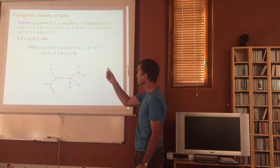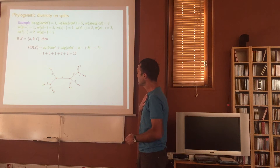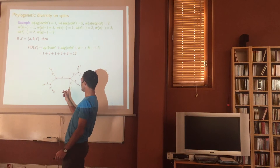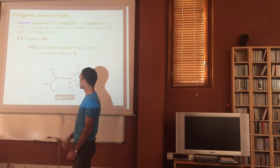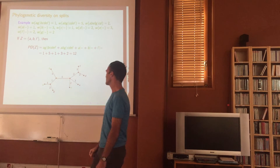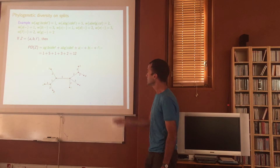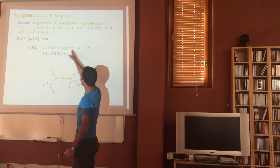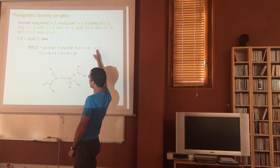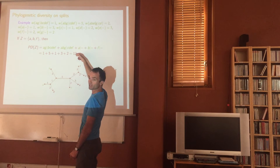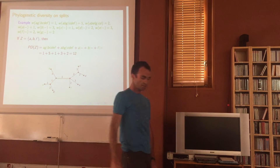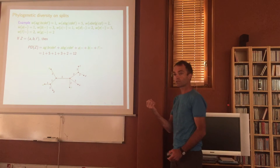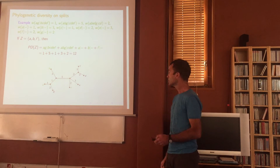If I look at the subset {A, B, F} on the tree, here are A, B, and F. The minimal tree connecting them is the green subtree, and that gives rise exactly to these splits — these edges get picked up — and there's the weight. So if the bipartitions do come from a tree, that's what the biodiversity corresponds to.